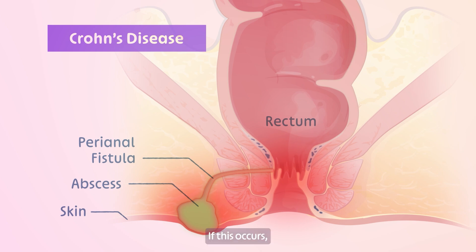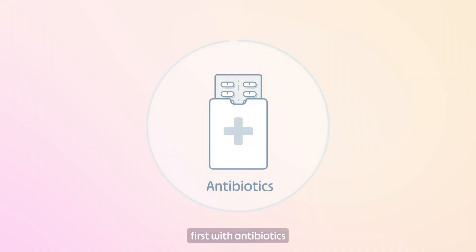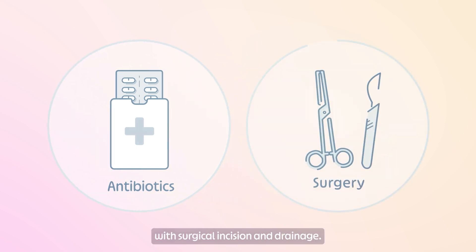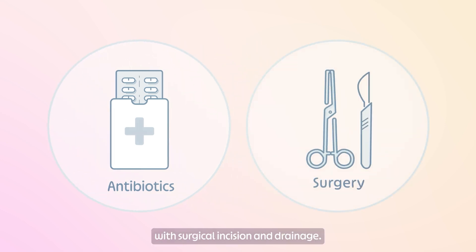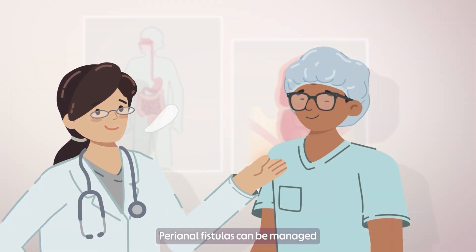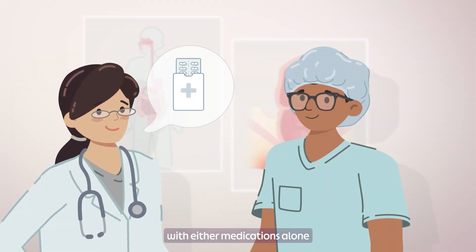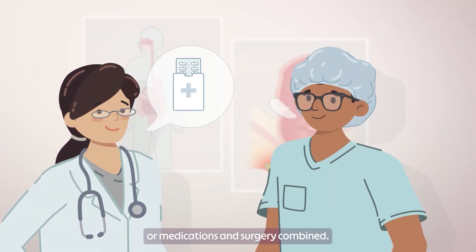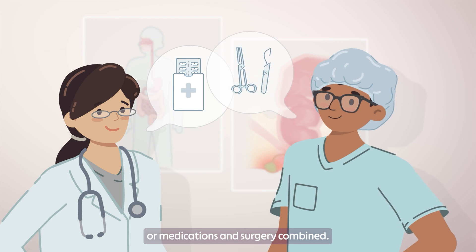If this occurs, the abscess would need to be treated first with antibiotics, or in some cases with surgical incision and drainage. Perianal fistulas can be managed with either medications alone or medications and surgery combined.